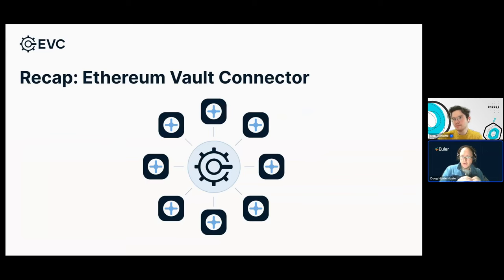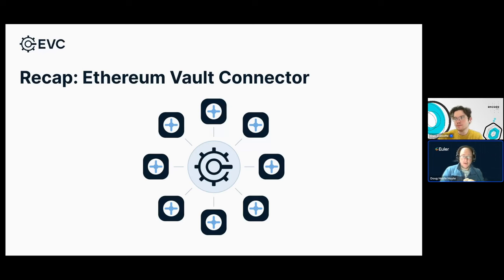The EVC is kind of like a framework contract. It's small and tries to be as minimal as possible while accomplishing its goals. It's also permissionless and ownerless. In some sense it's like a public good contract that we hope many different people, protocols, and companies will integrate with, because the idea is to create an ecosystem around this thing. It's a vault connector, connecting vaults with each other to maintain a relationship between vaults for the purposes of lending primarily.